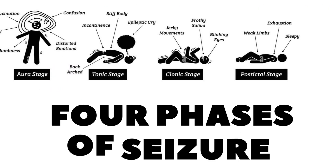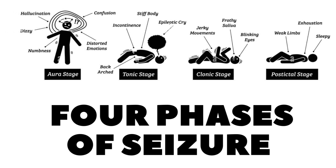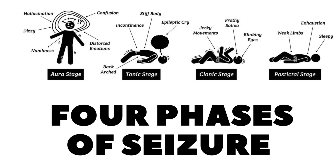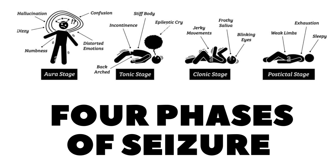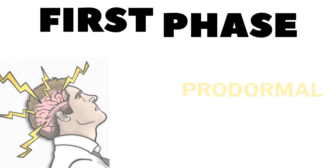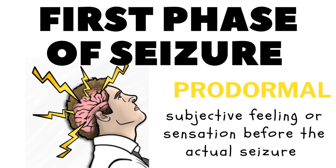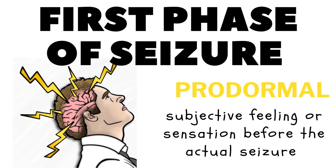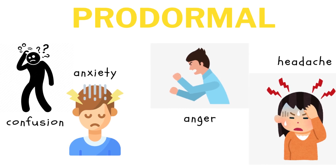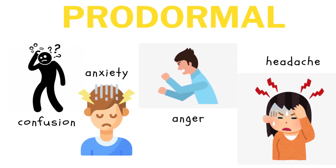The four phases of seizure are: prodromal, early ictal (aura), ictal, and post-ictal. The prodromal phase is a subjective feeling or sensation that can occur several hours or even days before the actual seizure. It is defined as the period from the beginning of early symptoms to more obvious diagnosable symptoms. Common prodromal symptoms include confusion, anxiety, irritability, headache, tremor, and anger or other mood disturbances.